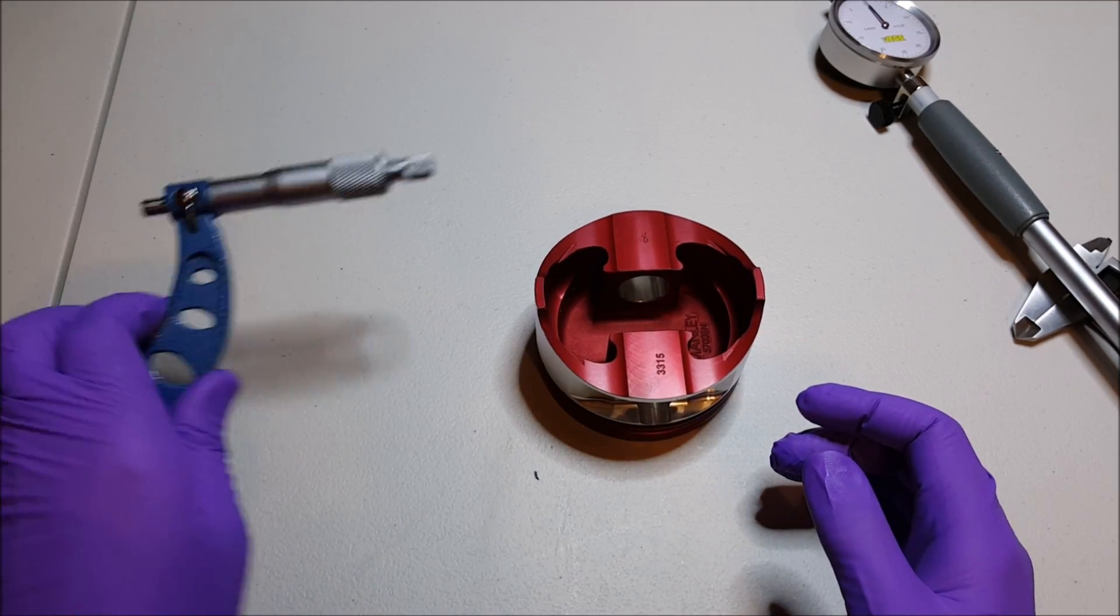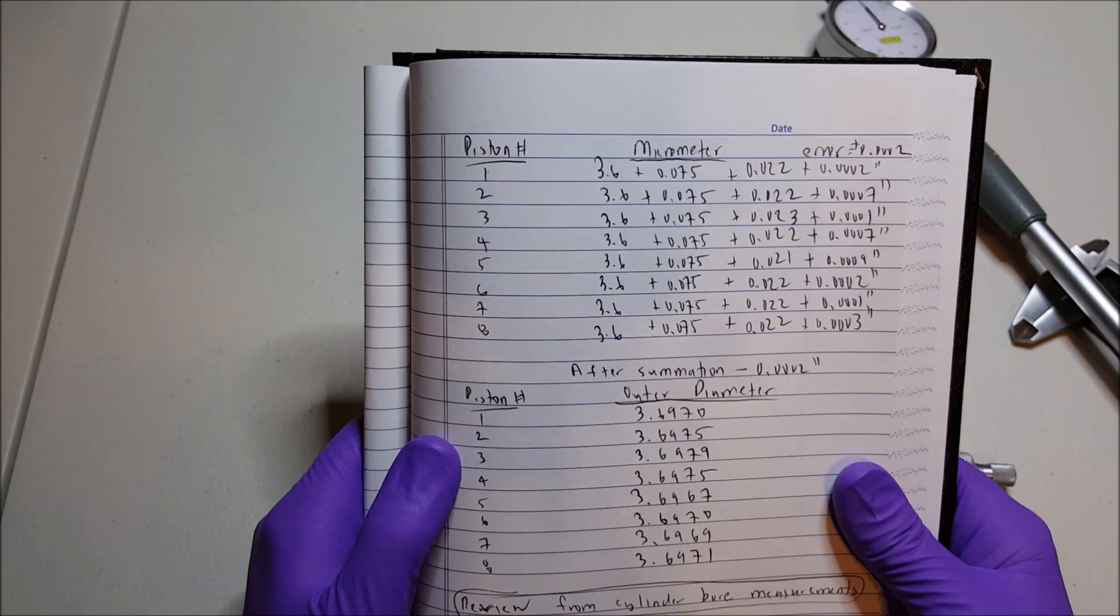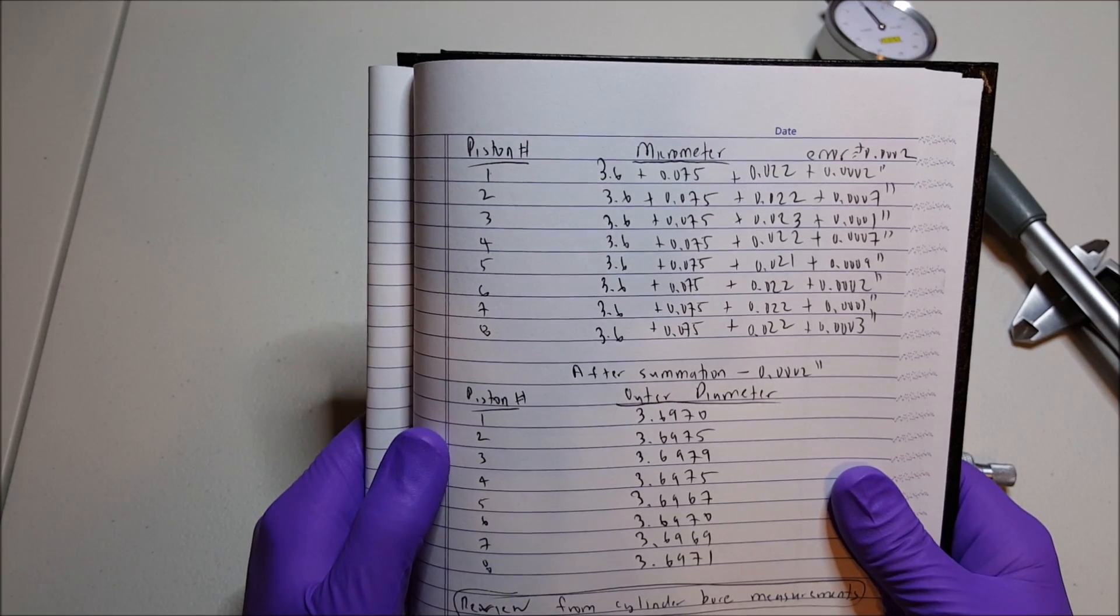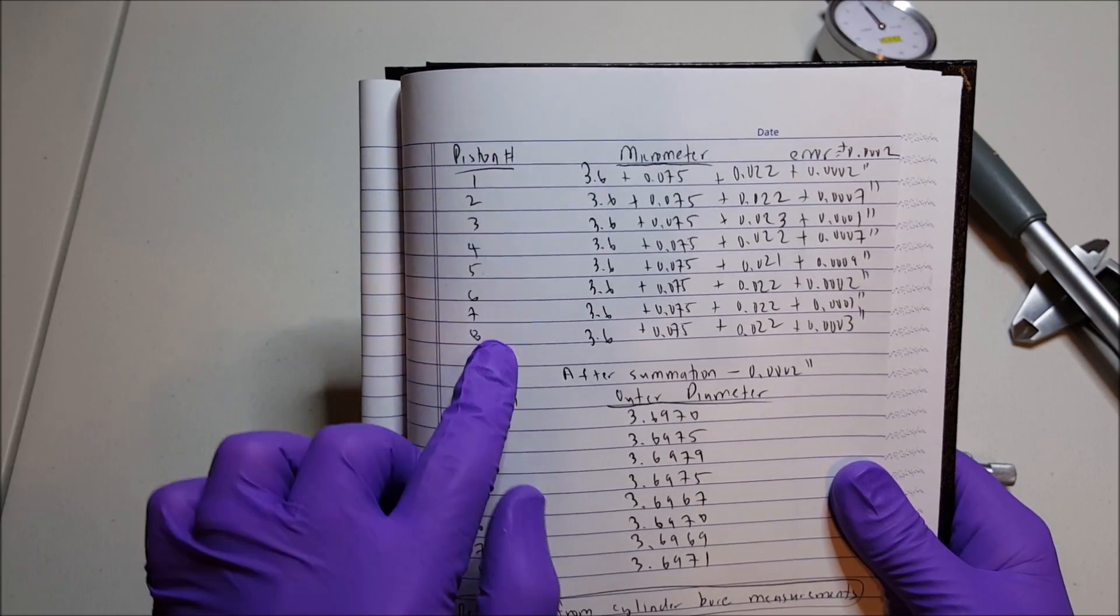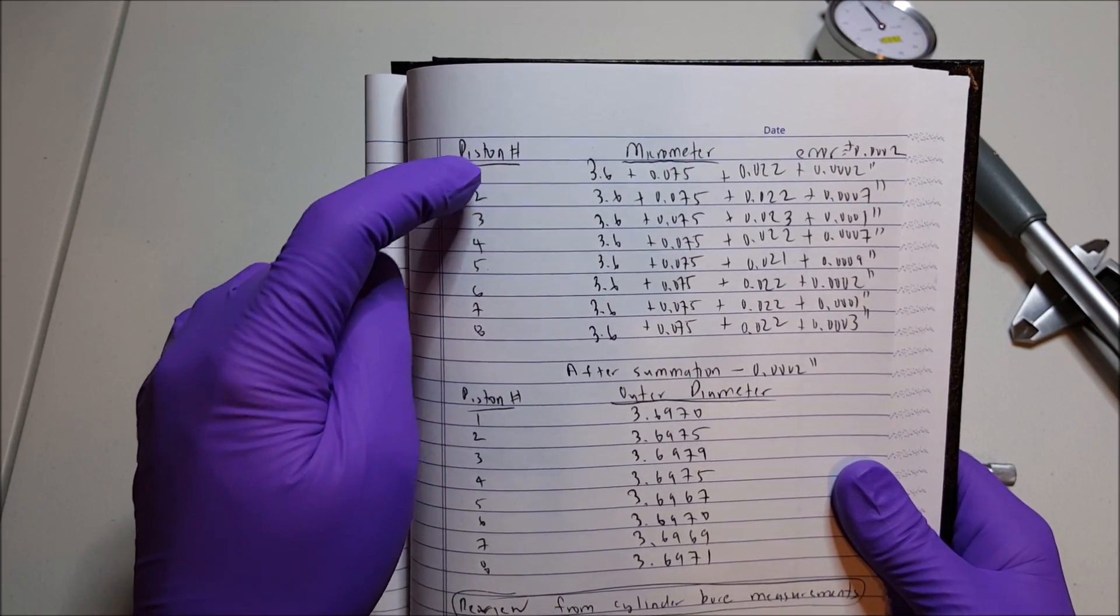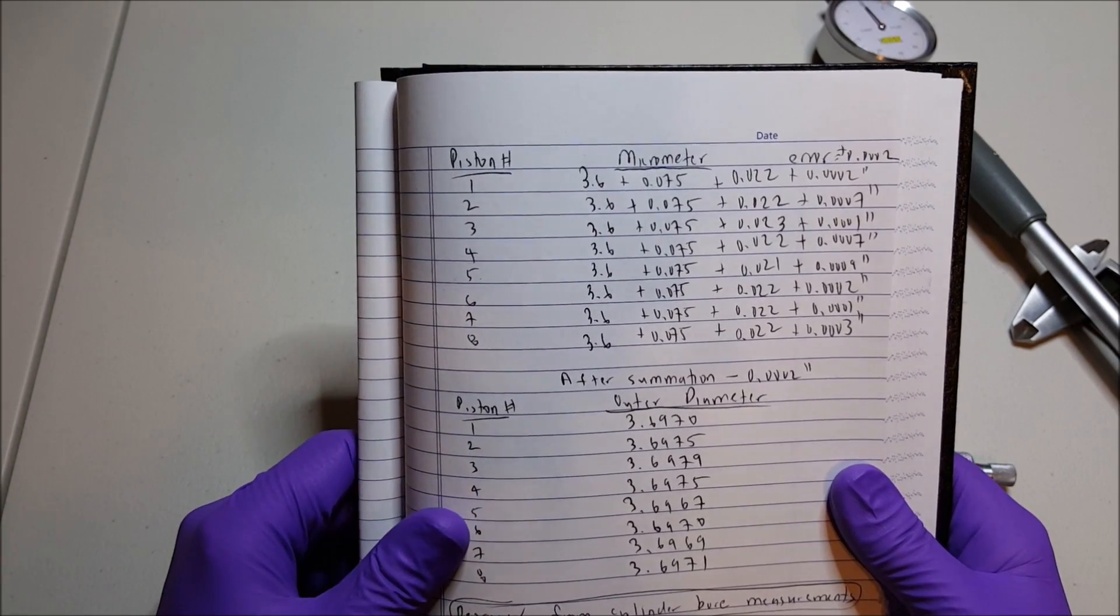So this is my engine build book, or at least a page from it. In the first column, I obviously want to list the piston number, the piston numbers that you're going to measure.